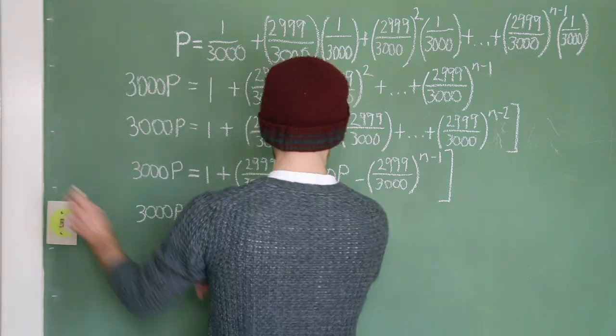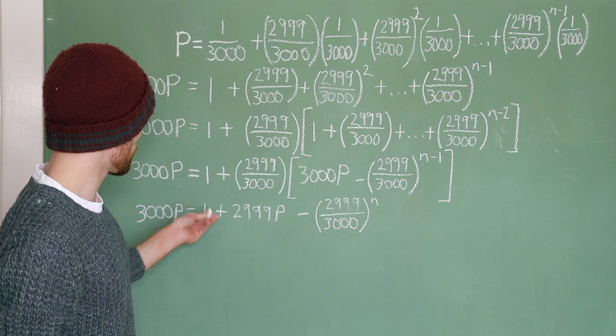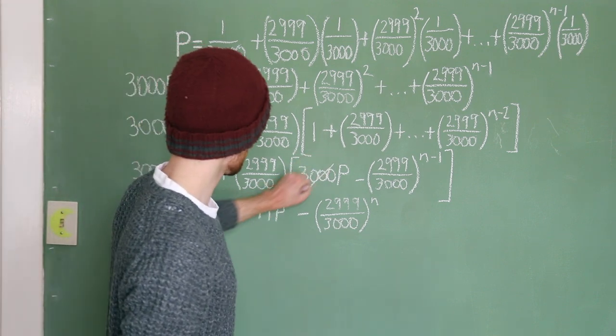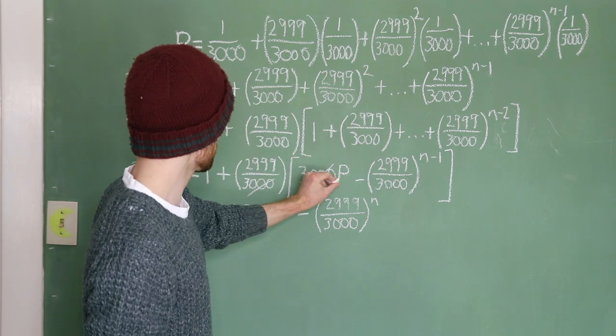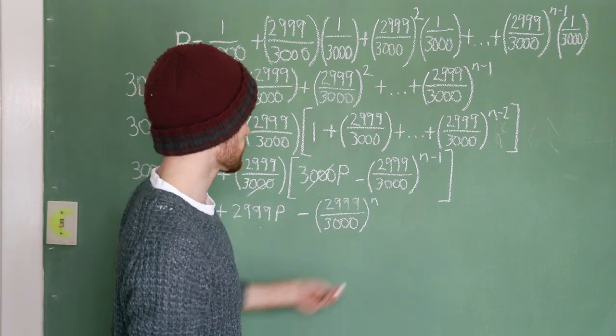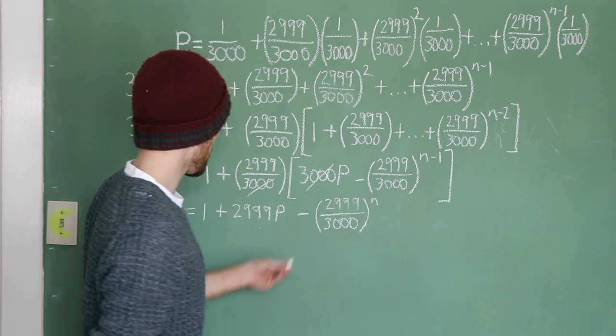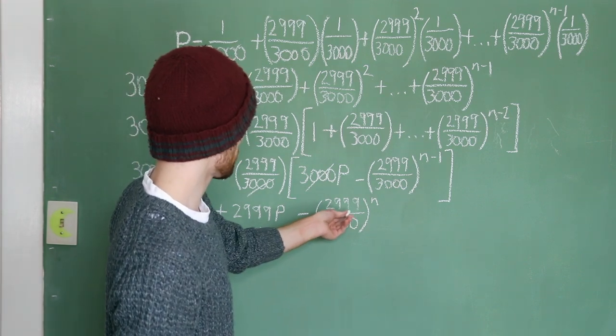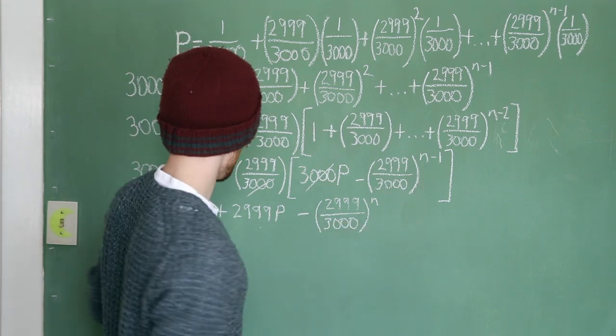So, let's just simplify. 3,000p equals 1 plus, these 3,000s cancel out, so we get 2,999p. And then, since we're dealing with the same fraction here, we just add the exponents. So, that's n minus 1 plus 1 gives you n, so minus 2,999 over 3,000 to the power of n. Great!